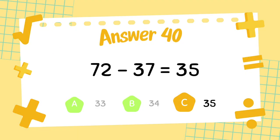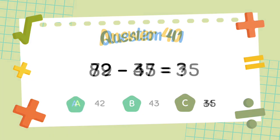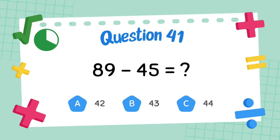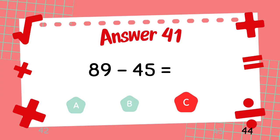The answer is 35. What is 89 minus 45? The answer is 44.